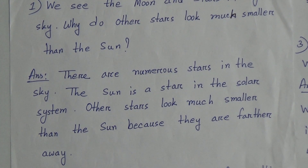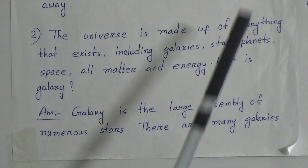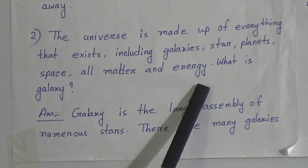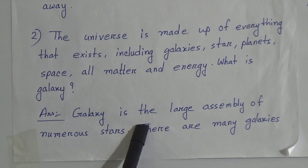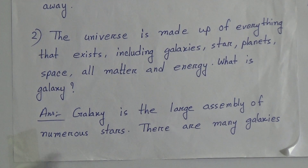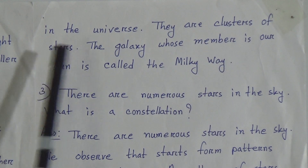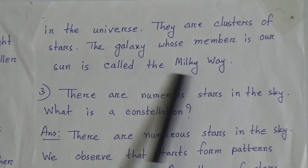Question number 2: The universe is made up of everything that exists, including galaxies, stars, planets, space, all matter and energy. What is a galaxy? Answer: A galaxy is the large assembly of numerous stars. There are many galaxies in the universe. They are clusters of stars.